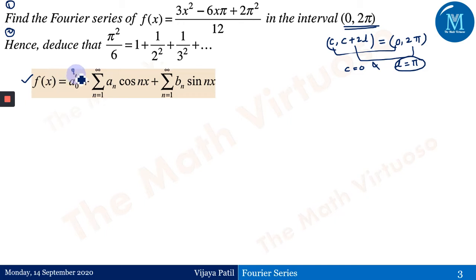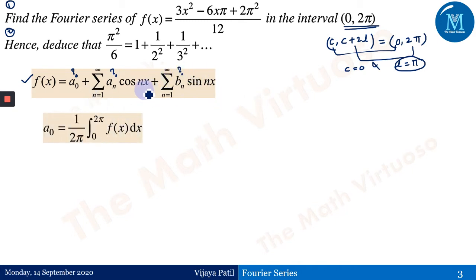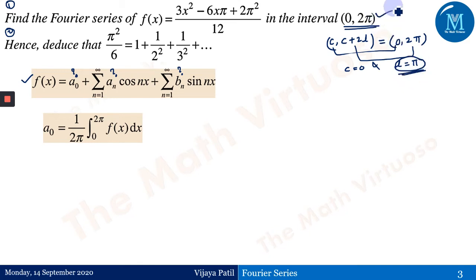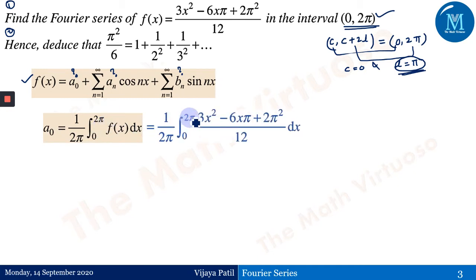Our target is to find a₀, aₙ, and bₙ to get the Fourier series expansion. The constant a₀ equals 1 upon 2π times the integral from 0 to 2π of f(x) dx. For this formula, please refer to the previous session where we discussed Euler's formula and how it changes according to the value of l.